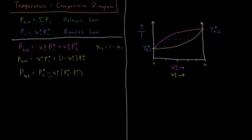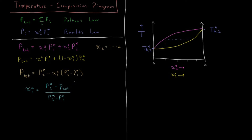Taking those values, we can solve for χ1 in the liquid phase and get a convenient equation. This is just an algebraic rearrangement: χ1(liquid) equals P2* minus total pressure, all divided by P2* minus P1*. This will be true for the liquid phase mole fraction for any binary ideal solution.